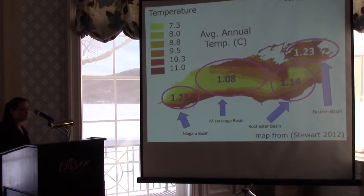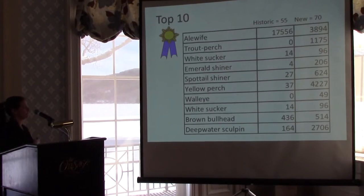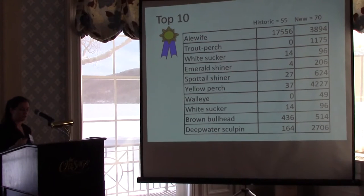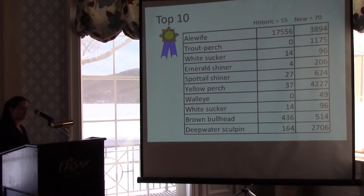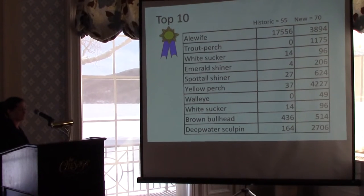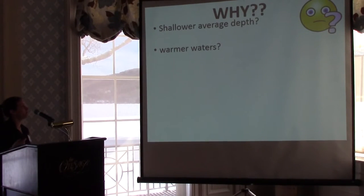So what did we see at these new transect sites that made such a difference in species diversity? These are the top ten largest differences in number of individuals per species caught — historic sites on the left, new sites on the right. Almost all of these species show a higher number of individuals caught at the new sites. The oddball in this top ten list is alewife, where we caught almost six times fewer alewife at the new transects compared to the historic transects. Which brings us to the main question of why.